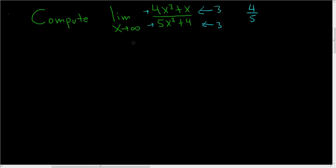So what if you actually wanted to show some work? We have the limit as x approaches infinity. The highest power of x is a 3, so we're going to divide everything by x cubed. So you have 4x cubed over x cubed plus x over x cubed. And in the denominator, we have 5x cubed over x cubed plus 4 over x cubed.